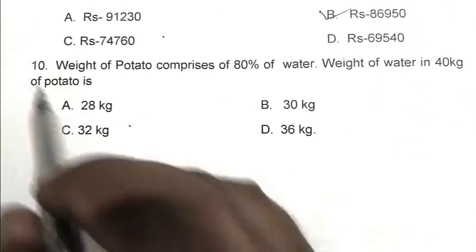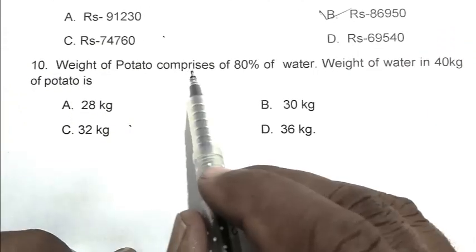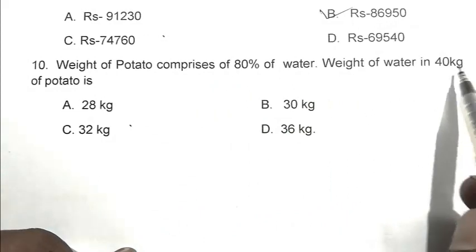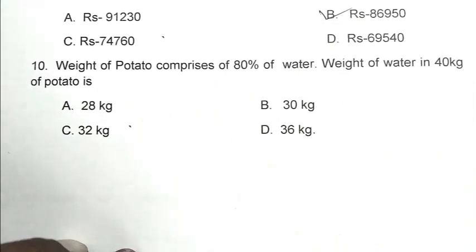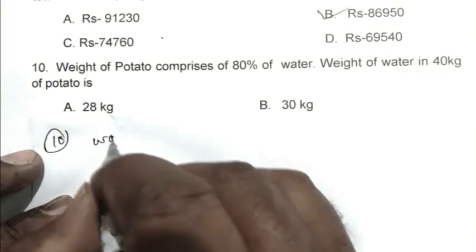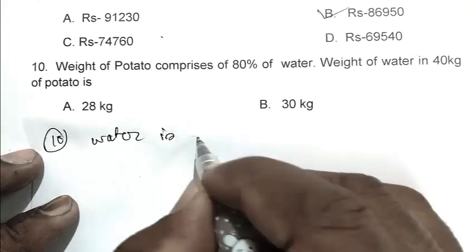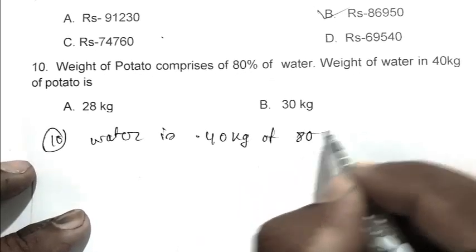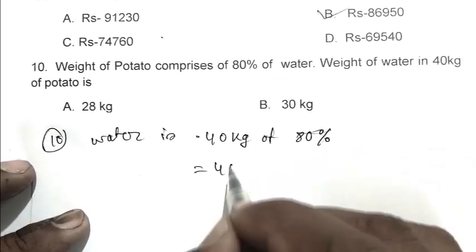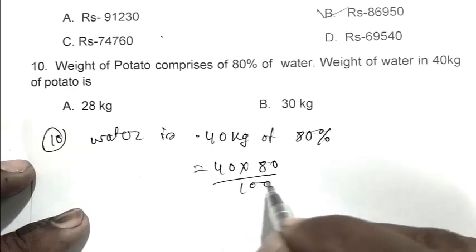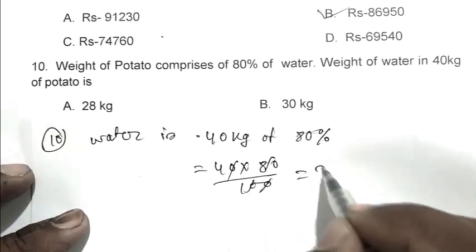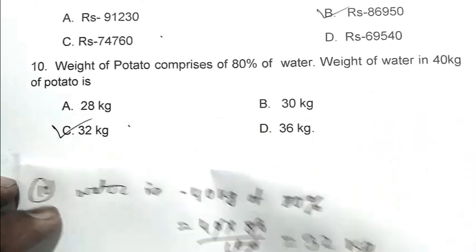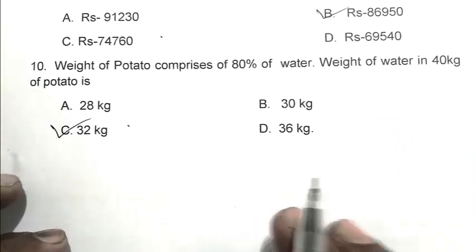Question number 10. Potatoes comprise 80% of water. The weight of water in 40 kg of potatoes is. Water equals 40 kg multiplied by 80%, that is 40 multiplied by 80 by 100, which is 32 kg. So C is the right answer. Thank you for watching. Have a good day.